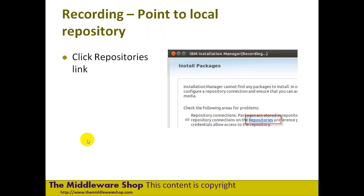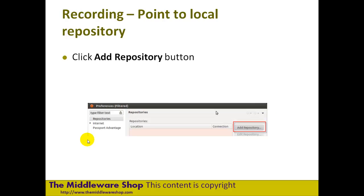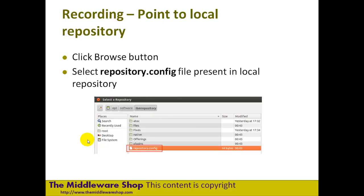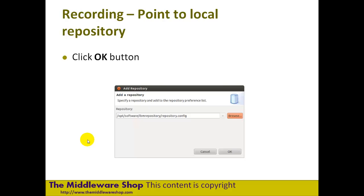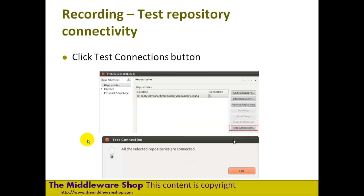Once we've launched that process, we can configure the repository we're going to use. There's a file menu option for this, but you can also use the shortcut called Repositories. You can add a repository, browse to the location where we put our repository, and we can see the repository.config is the file we're looking for. We add that and then you can see we have our repository configured. We can do a test connection to verify that we can connect to that repository, meaning the installer will get what it needs from it.